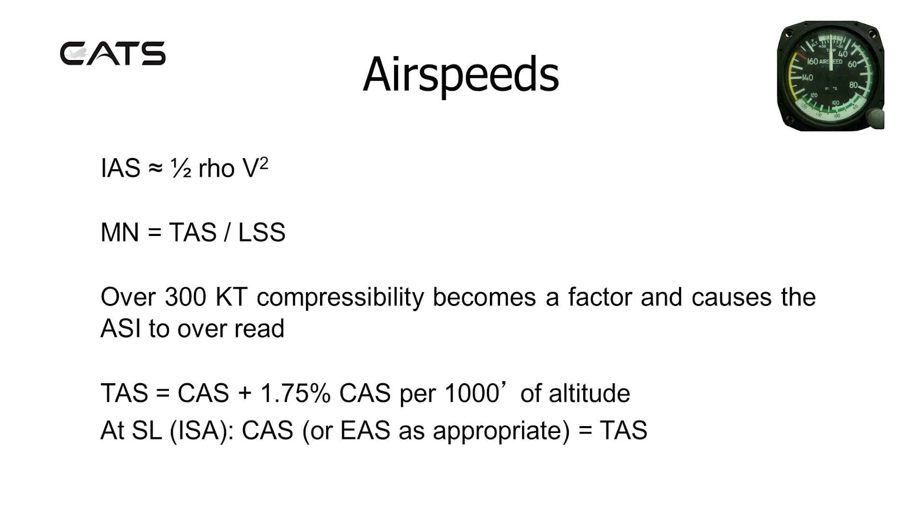Indicated airspeed isn't half rho v squared. Half rho v squared is actually a pressure, which is why I should really use the squiggly approximate equal sign. It has to go through another formula known as St. Venant's formula to be able to get a speed out of it. So all I can really say is indicated airspeed corresponds to half rho v squared, the pressure.